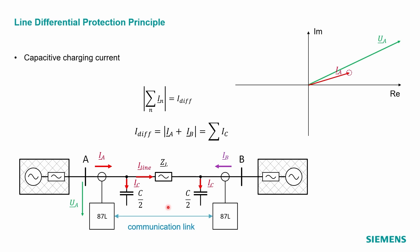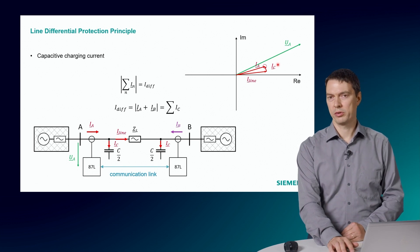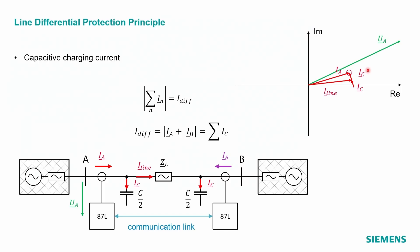Consider we have a load current situation with the current IA and the voltage UA at the terminal A, which are more or less in phase. That means that the cosinus phi, the power factor is close to 1. The capacitive current IC is added to the current IA and forms the line current. We ignore the voltage stop of the line impedance and can add at the terminal B another portion of the capacitive current IC and get to the current IB in the opposite direction. The sum of both current phases result in a differential current IDIF.